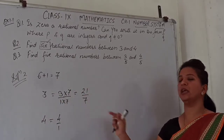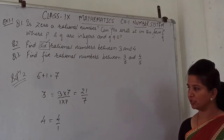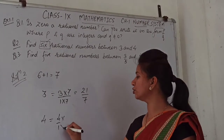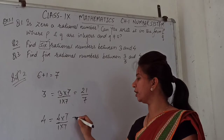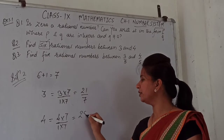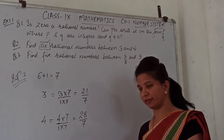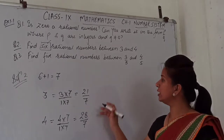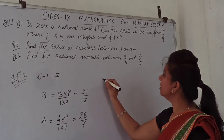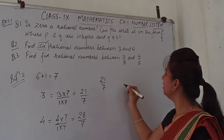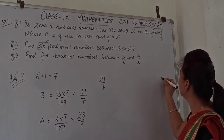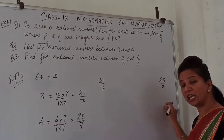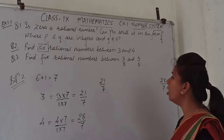So 3 is equivalent to the rational number 21 upon 7. Similarly, for 4, if you multiply by 7, you get 28 upon 7. So both 21 upon 7 and 28 upon 7 are rational numbers equivalent to 3 and 4 respectively. These are now written as our boundary fractions.